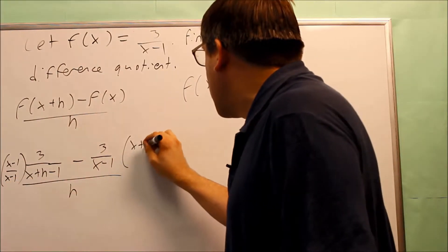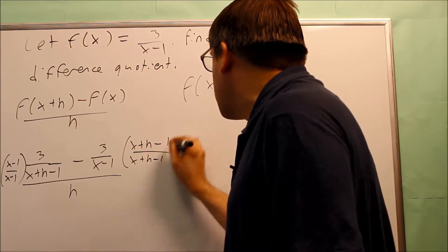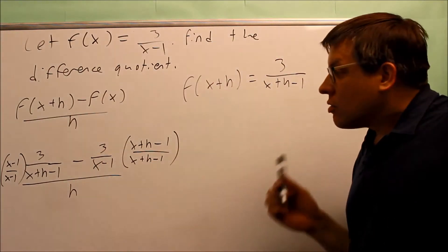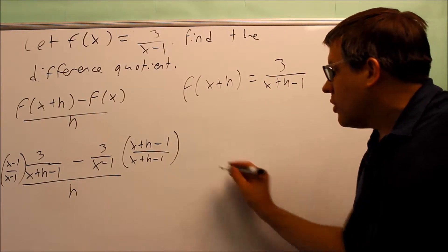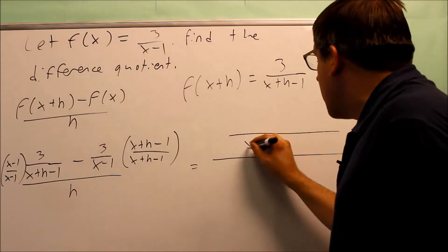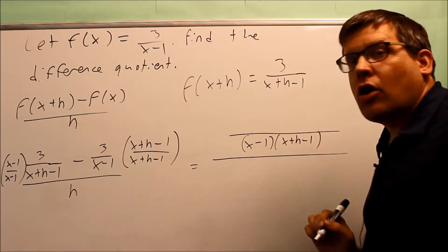Over here, I'm going to multiply top and bottom by x plus h minus 1 over x plus h minus 1. So now I have each of those. So now I need to do some simplifying. I need to write it as one denominator,